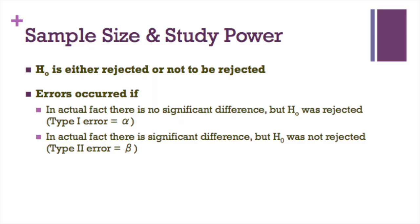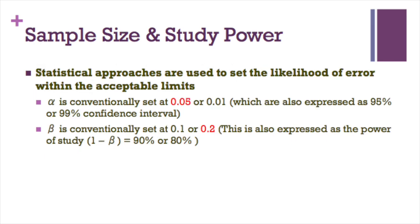In hypothesis testing, H null is either rejected or not to be rejected. Errors can occur if in actual fact there is no significant difference but H null was rejected, this is type one error. If in actual fact there is significant difference but H null was not rejected, this is type two error. Conventionally, alpha is usually set at 0.05. On the other hand, beta is usually set at 0.2, which expresses as power of study at 0.8 or 80 percent.